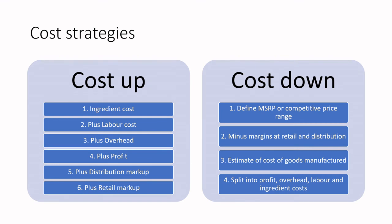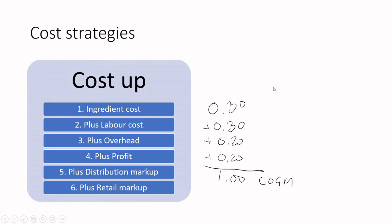Let's work through a cost-up example. Say ingredient cost is 30 cents, labor cost is 30 cents, overhead is 20 cents, and profit is 20 cents — that gives a cost of goods manufactured of $1.00. These are arbitrary numbers, but note: that 30-cent ingredient cost means ingredients are 30% of COGM. When we add distribution and retail markup we get a suggested retail price of $2.00. So roughly, your ingredient cost should never be more than 20% of your product's retail price, ideally pushing down to 10%, because all those margins gobble up cost.